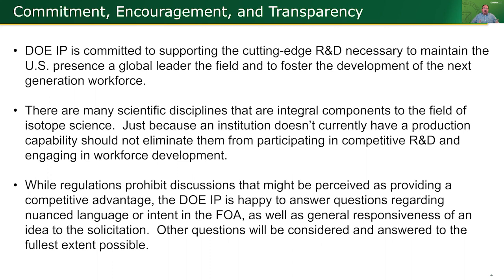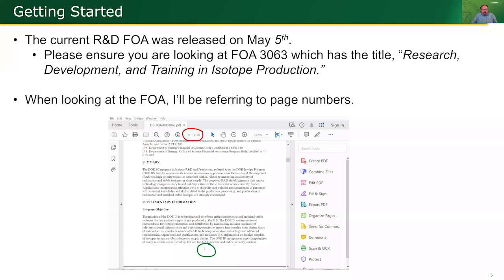Any other questions will be considered on a case-by-case basis. The current FOA is solicitation 3063, titled Research, Development, and Training in Isotope Production. It was published on May 5th. If you're following along with the PDF from science.energy.gov, make sure you have the correct FOA open. I'll be referring to the document page numbers — circled in green at the bottom of your screen — as opposed to the PDF page numbers, because there is a disparity between the two.